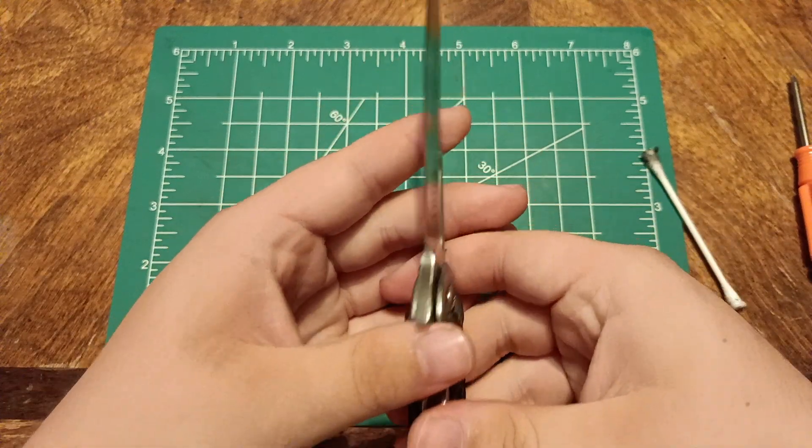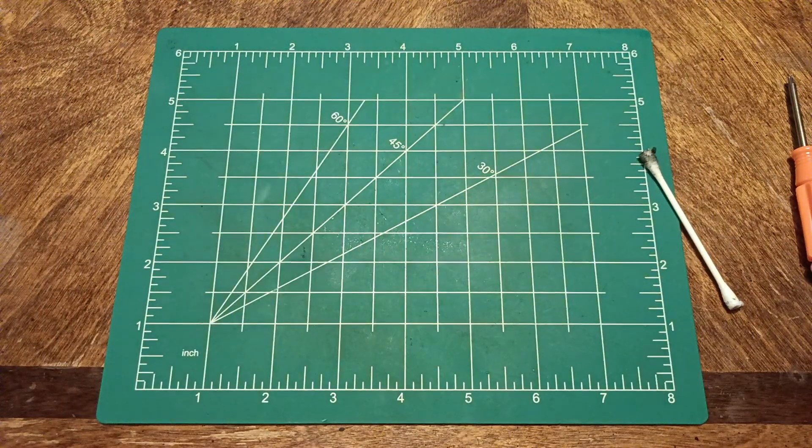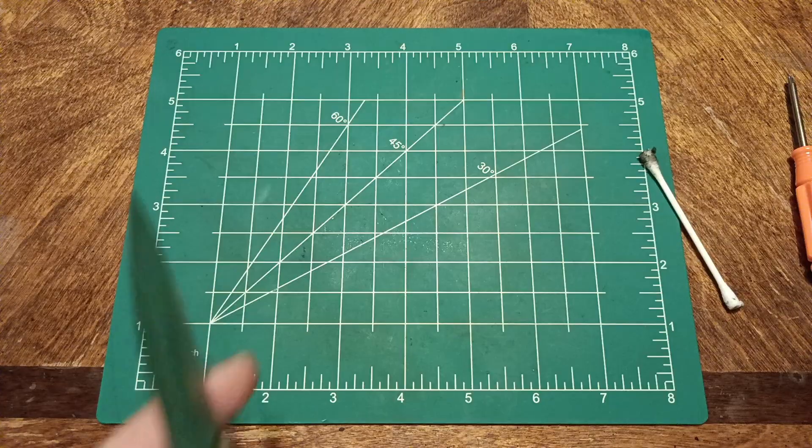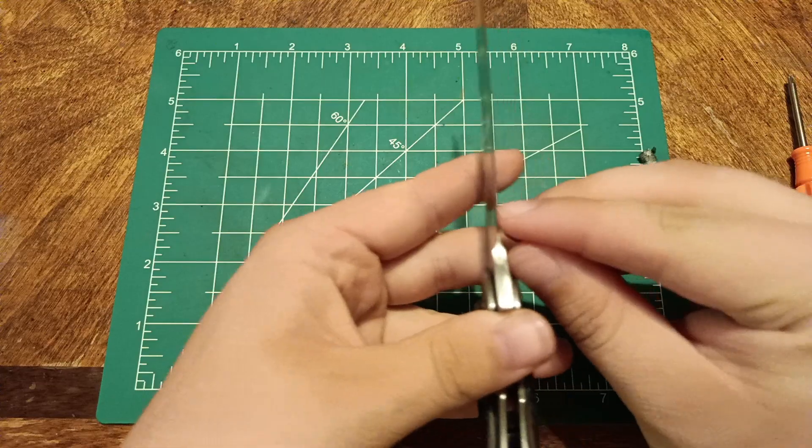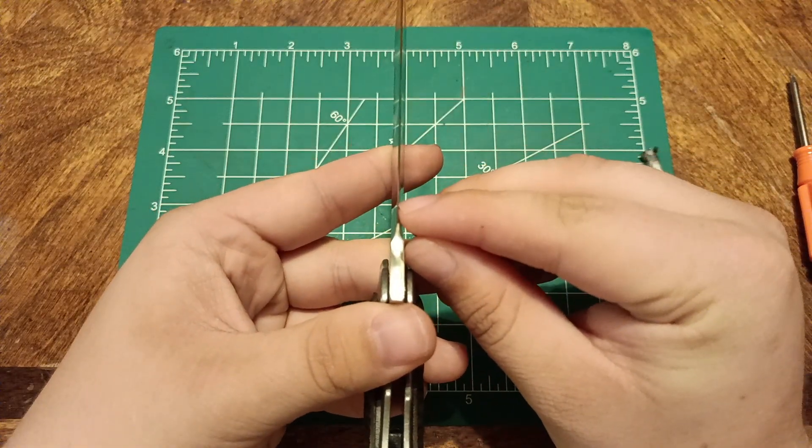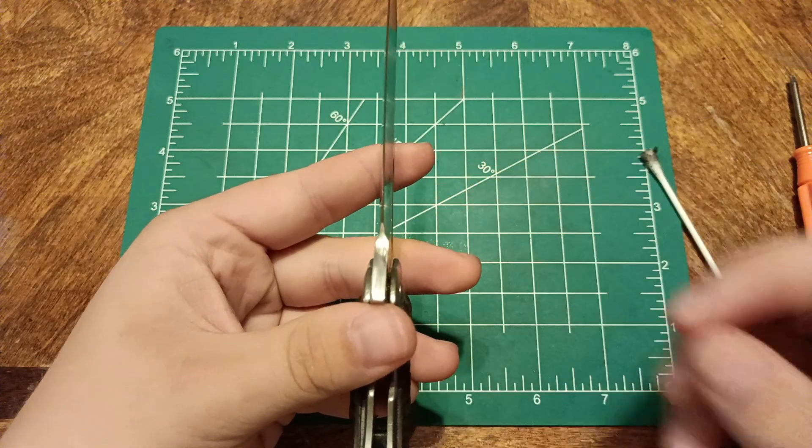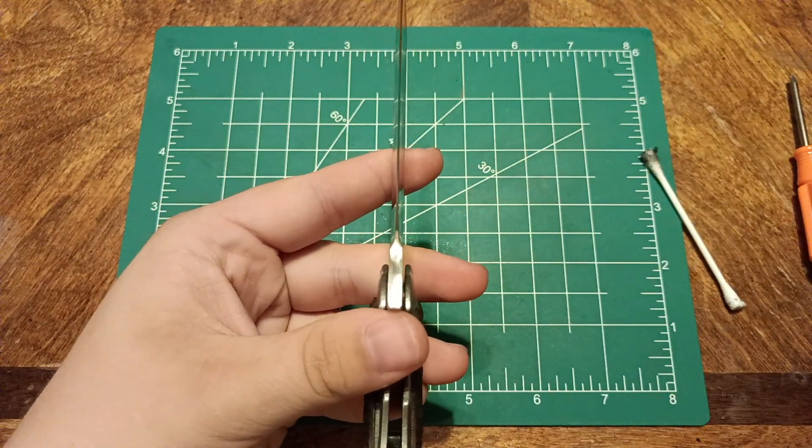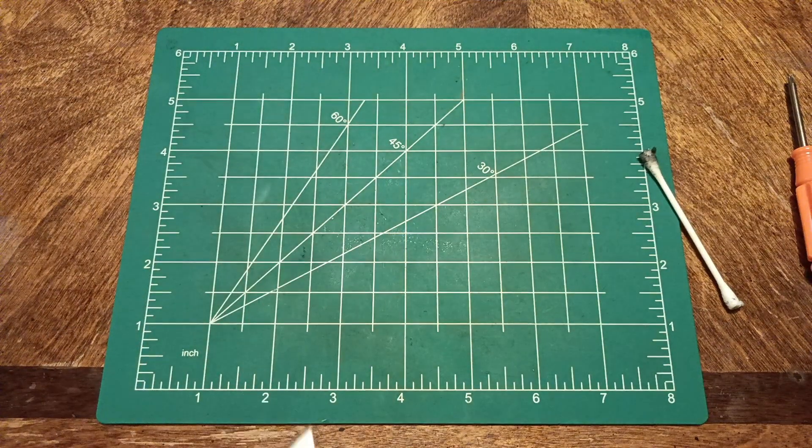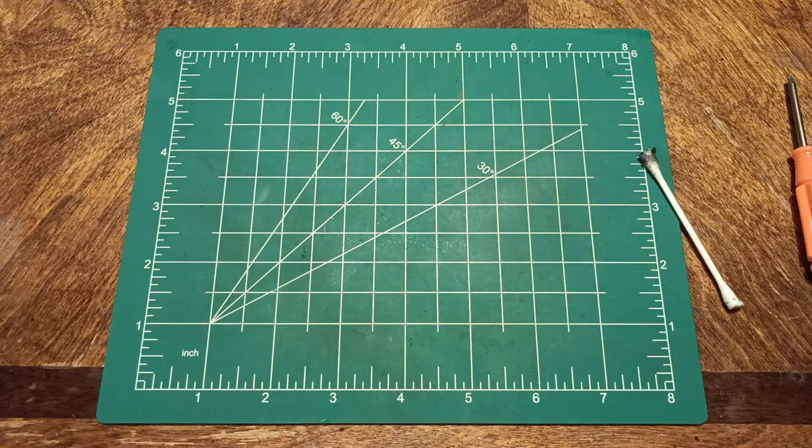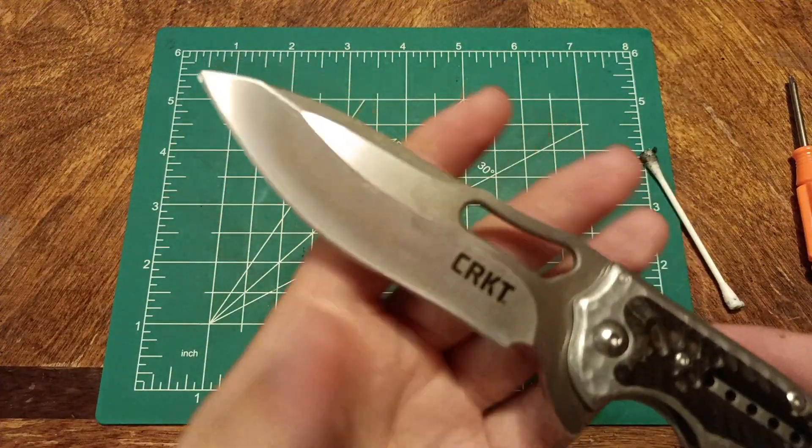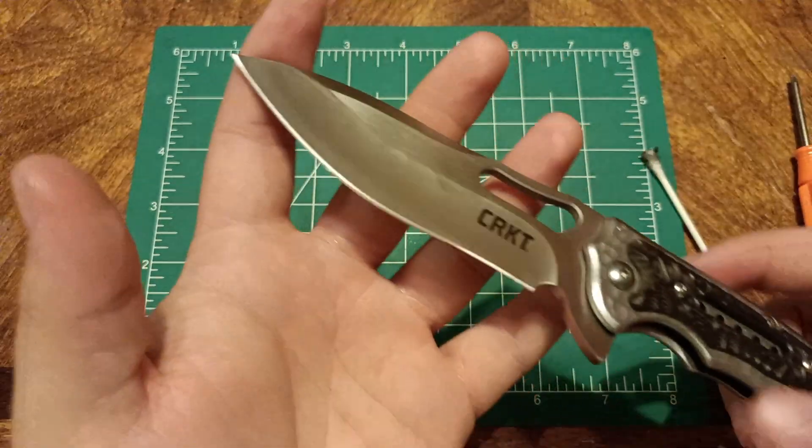It does have a completely factory edge with a tiny bit of glinting right here in the recurve. That right there, it's kind of hard to see, but it is there. Other than that, I don't see any blemishes or anything on this thing. It is immaculate.